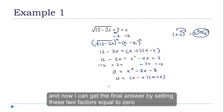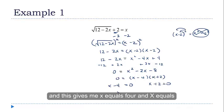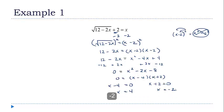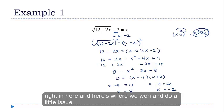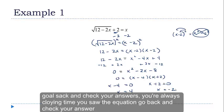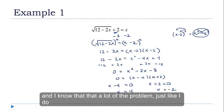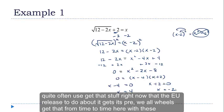Setting these two factors equal to 0 gives me x equals 4 and x equals negative 2. Now here's where we run into a little issue. With these radical equations, it is extremely important that when you're done, you go back and check your answers. I know you're always told to go back and check, and a lot of you probably skip that step. With these problems you can't.